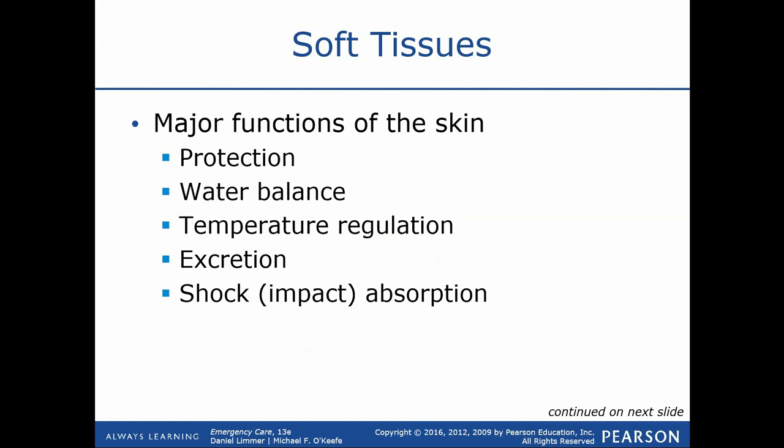The major functions of soft tissues include protection — not just absorbing impact energy, but also protecting us against the outside environment: bacteria, viruses, and everything else. It helps us maintain water balance, preventing water from leaking out of the body and keeping fluid within the interstitial areas between blood vessels and cells. It also helps with temperature regulation, excretion, and shock absorption.